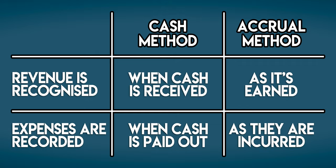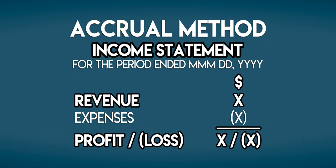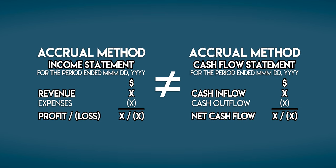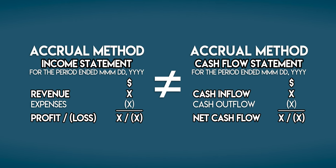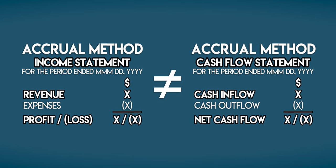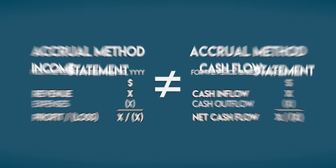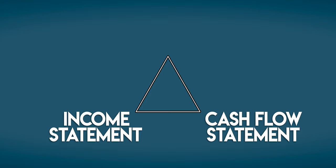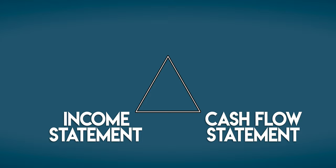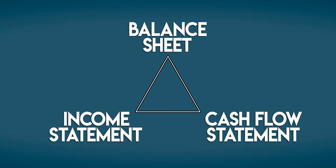So revenue must be recognised as it's earned and expenses must be recorded as they are incurred. In accrual accounting we still have the income statement, but this time it represents what a business has earned and incurred, not its cash inflows and outflows — so it's not equivalent to a cash flow statement. Businesses using the accrual method keep a separate cash flow statement alongside their income statement, and they also keep a balance sheet which holds their assets, liabilities, and equity. Not long ago I made videos covering the income statement and the balance sheet — you can find links to both of those down in the description.